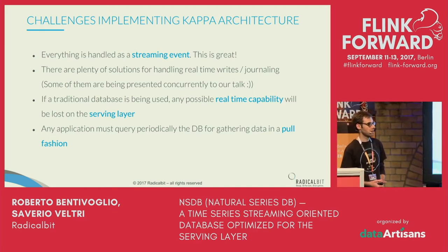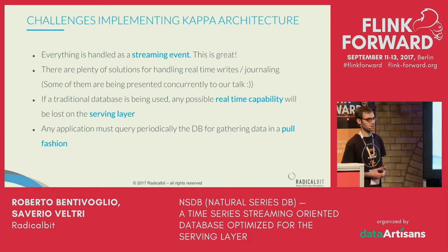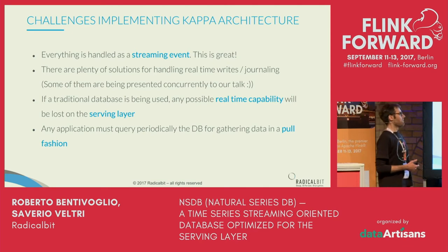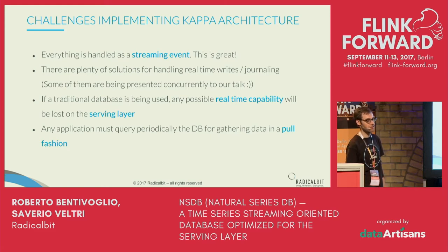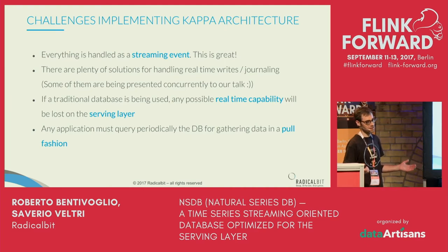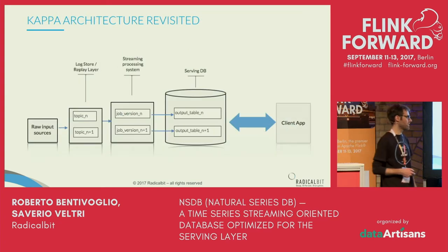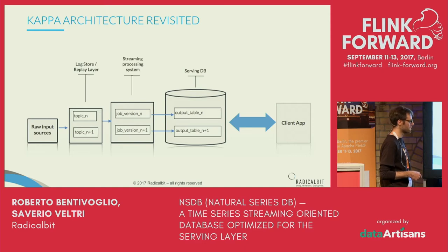There are a lot of challenges implementing a Lambda architecture. One is about managing all the data as streaming events — which is really cool. There are a lot of solutions on the journal side, such as Kafka, Pravega, and Cassandra, but it's not always easy to find on the serving side a solution that fits well with streaming analytics applications. This is also a reason why we decided to implement our database in this way.